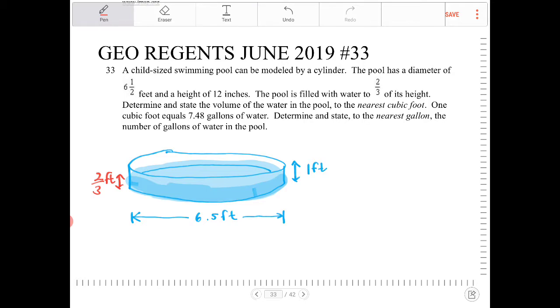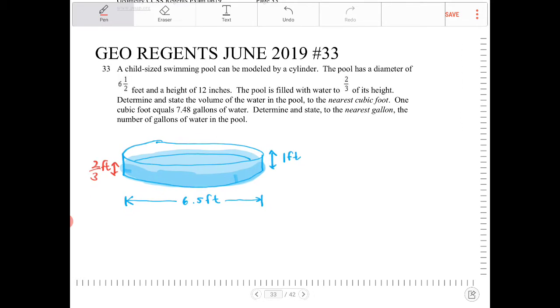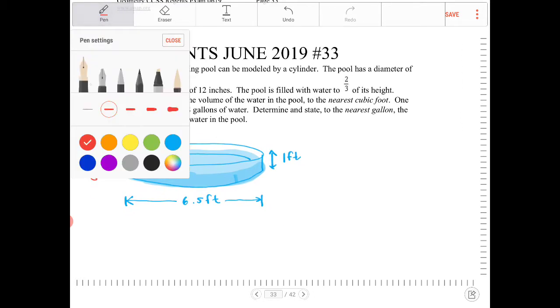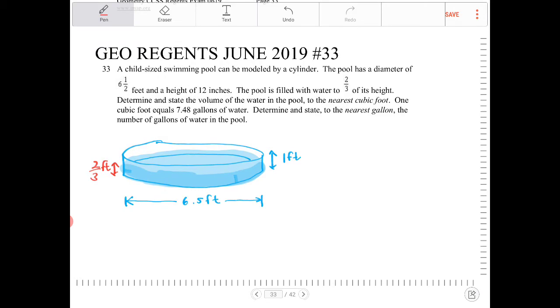Determine and state the volume of the water in the pool to the nearest cubic foot. One cubic foot equals 7.48 gallons of water. Determine and state to the nearest gallon the number of gallons of water in the pool. It's interesting because I filled up the water for my child and did a very similar question with my wife.